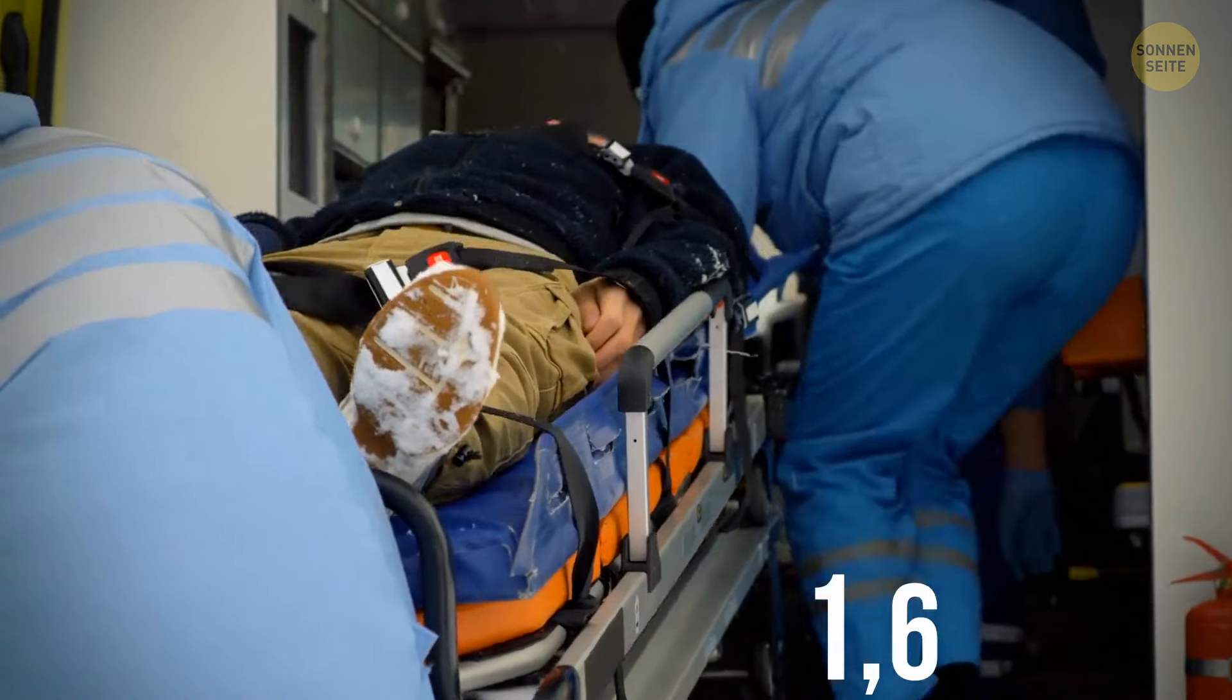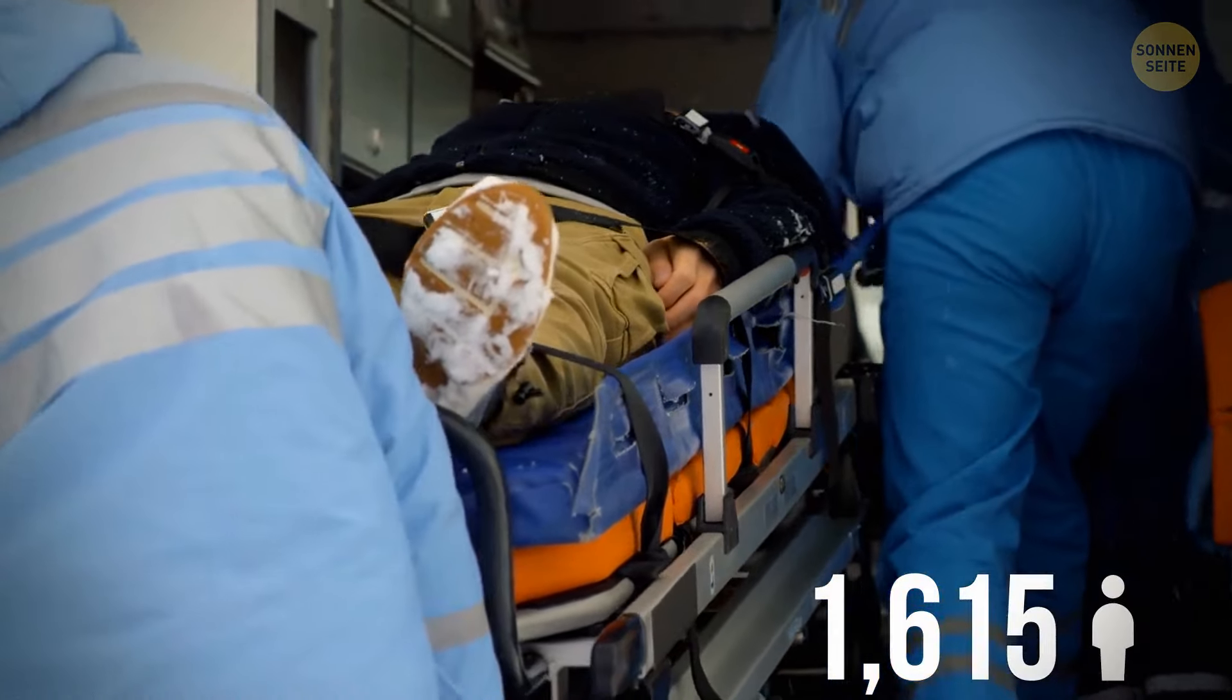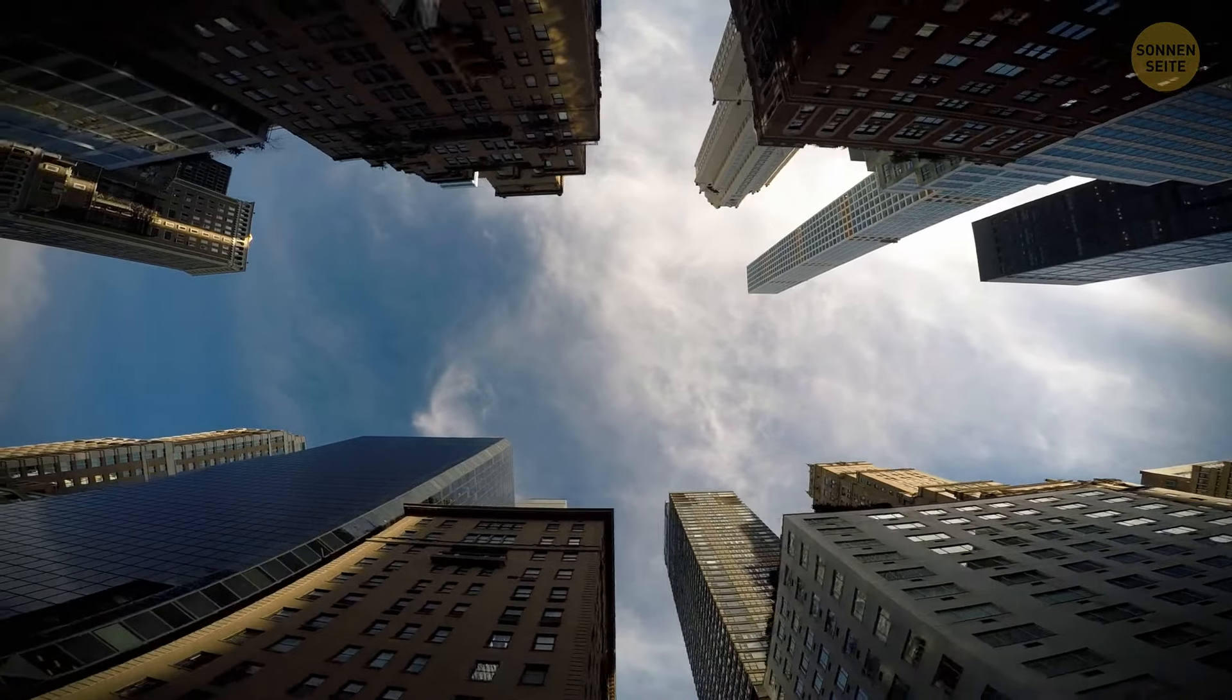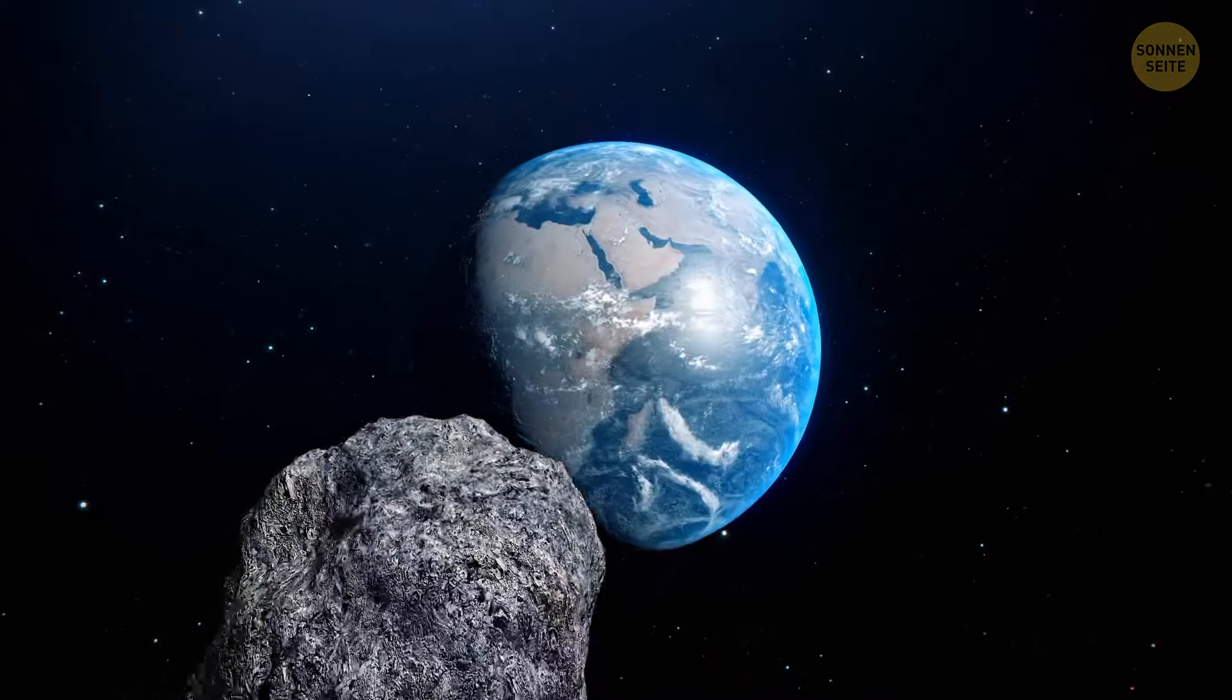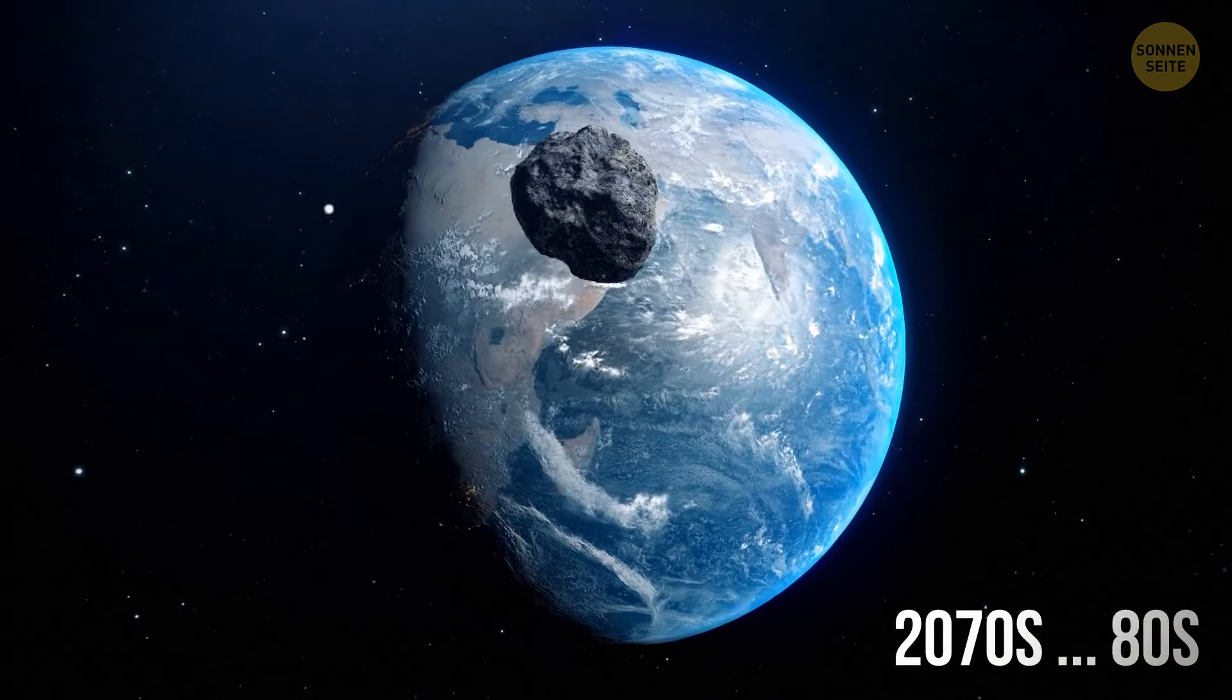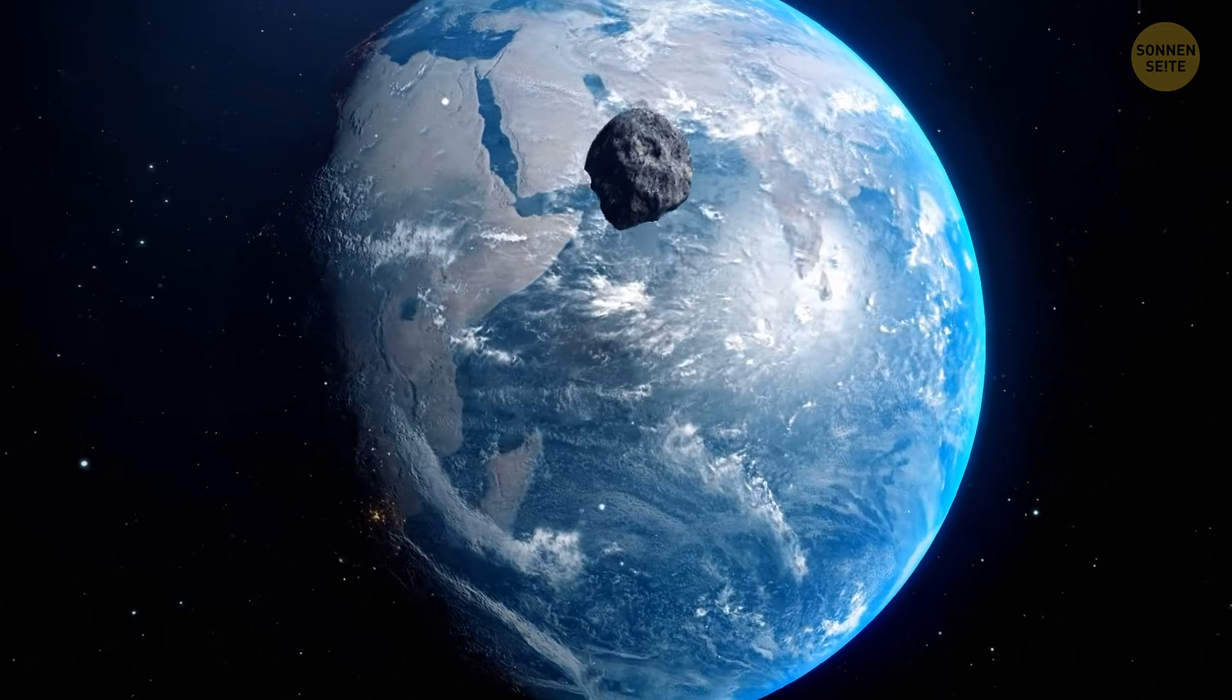It took a while to repair everything. And the scale of this destruction was quite serious. As a result, there were 1,615 injured but fortunately no casualties. At least we're safe for the time being. The next such asteroid may come to us only in the 2070s or 80s, and no one knows where exactly it wants to land.